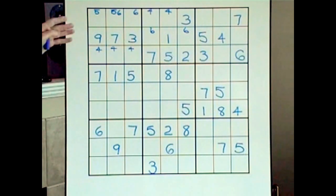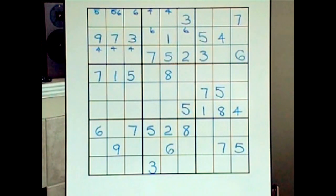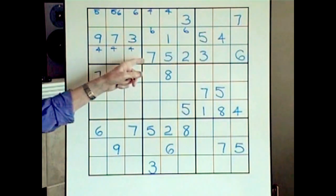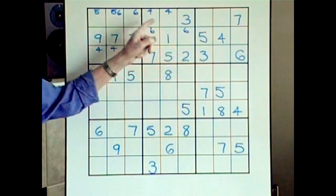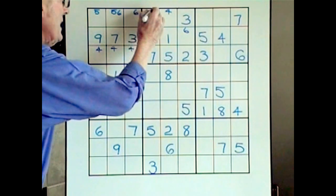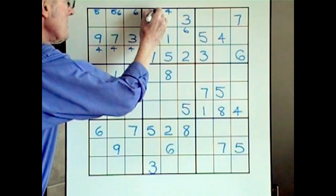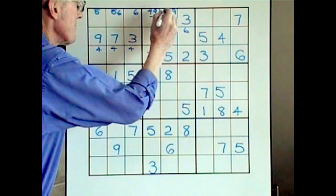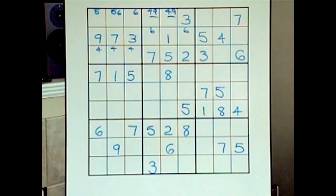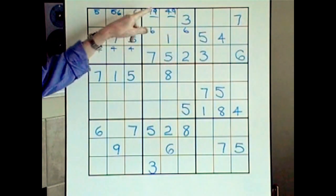Eights — in the top three blocks here we don't have a lot of places to really work on for the eights. Let's do the nines. Again, because of this line, down in here the nine cannot be there, it cannot be there — it has to go up on top. It's like the four, which means it will become a matching pair — if that's a nine, that's going to be a nine.